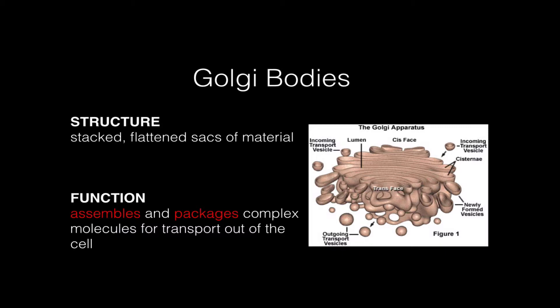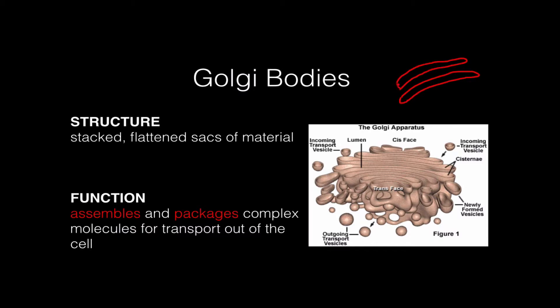The Golgi bodies are a lot like the ER, but they're a little bit more compact, and they look like a stack of pancakes. It looks like a sack of pancakes stacked on top of each other if you cut through it and do a cross-section — with one side on one end and another side on the other.